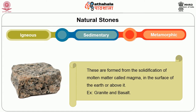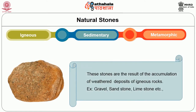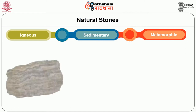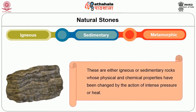Examples of igneous rocks include granite and basalt. Sedimentary rocks are the result of accumulation of weathered deposits of igneous rocks; examples include gravel, sandstone, limestone, etc. Metamorphic rocks are either igneous or sedimentary rocks whose physical and chemical properties have been changed by the action of intense pressure and/or heat.